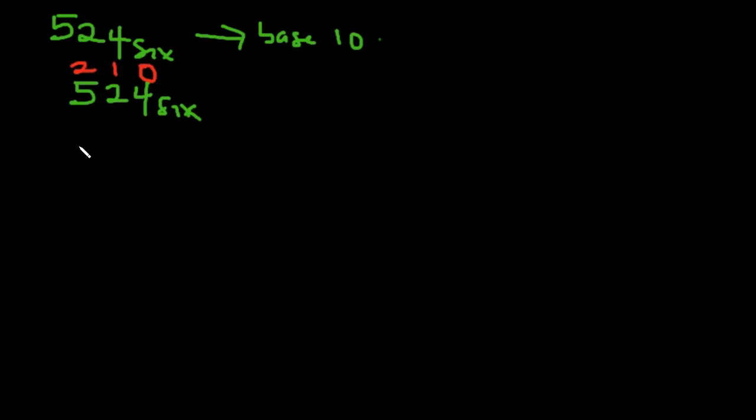I have 5 multiplied by 6 to the power of 2, plus 2 multiplied by 6 to the power of 1, plus 4 multiplied by 6 to the power of 0. If you note it very well, you'll see that every number on this line is 6, because I'm multiplying by the given base.